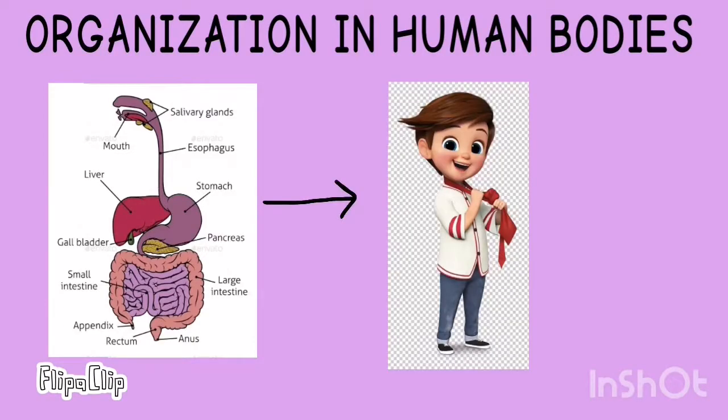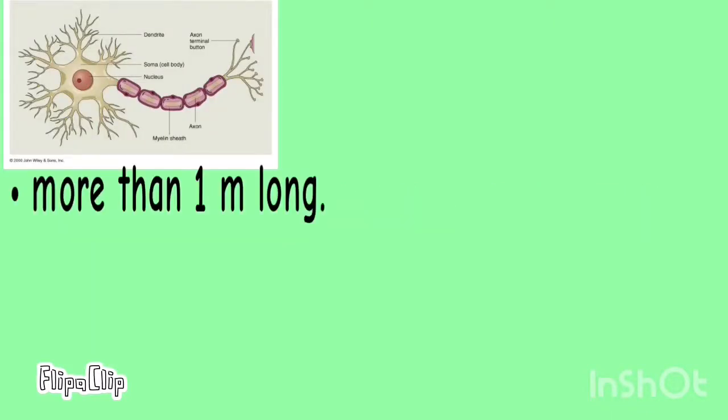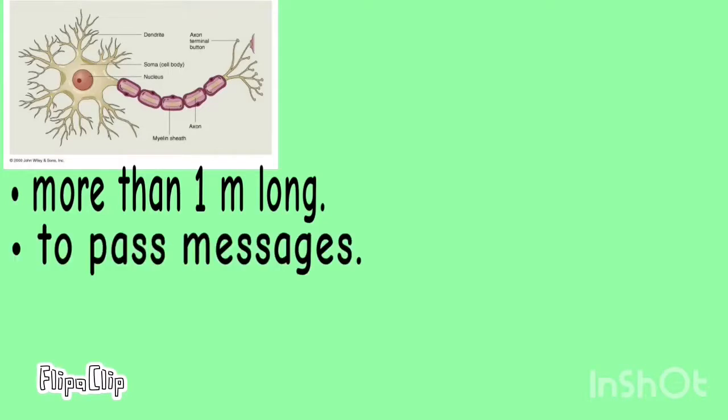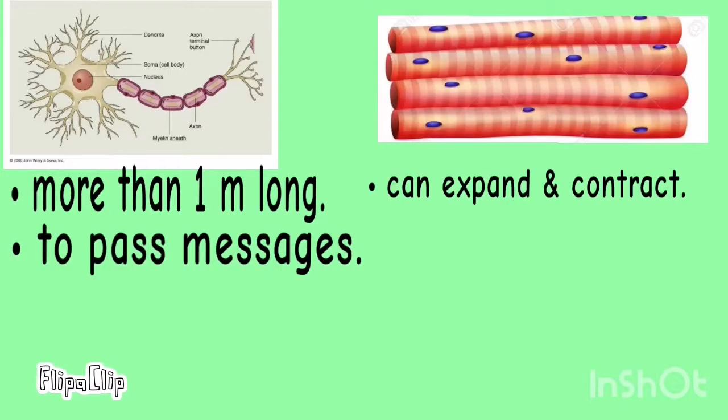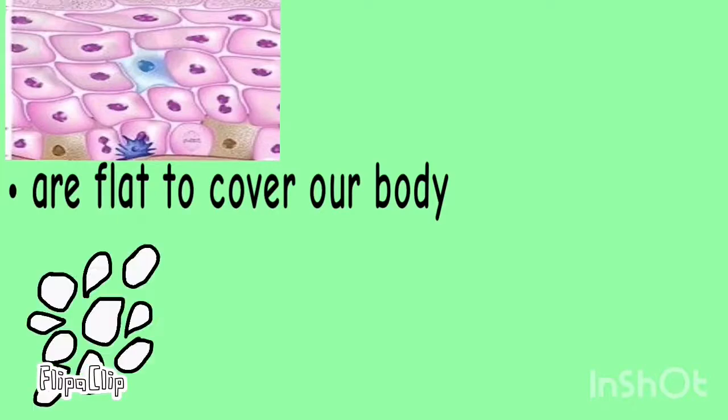Cells are different in shapes and sizes. Nerve cells have fibers that are more than one meter long to pass messages. Muscle cells can expand and contract. Skin cells are flat to cover our body. White blood cells can change their shape to destroy germs.